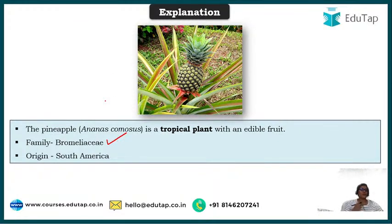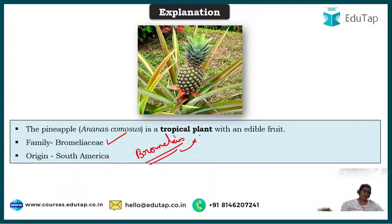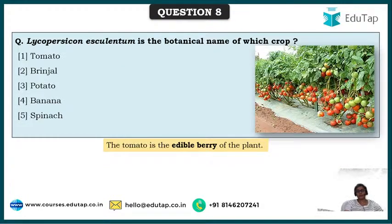The enzyme produced by Ananas comosus (pineapple) is bromelain, which is generally used as a meat tenderizer and also in various weight loss programs because it digests protein. Even when you eat fresh pineapple you feel a tingling on your tongue because it acts on the flesh of the tongue as well. It is bromelain that makes pineapple useful as a meat tenderizer.